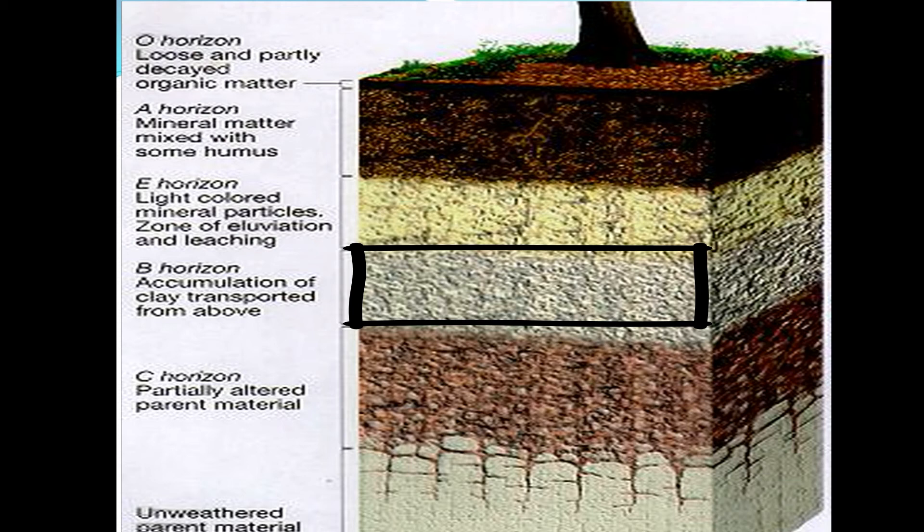Hence, it is sometimes called the illuviation zone. It is the layer where roots of big trees end. It contributes less to plant growth because the roots of plants can't reach the layer and it lacks organic matter. So this layer has very little significance when it comes to plant growth.